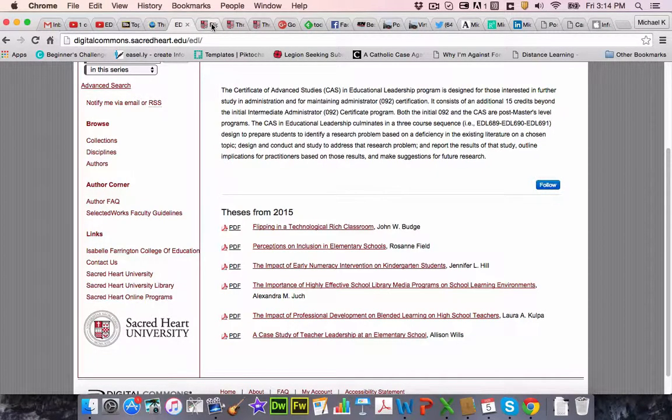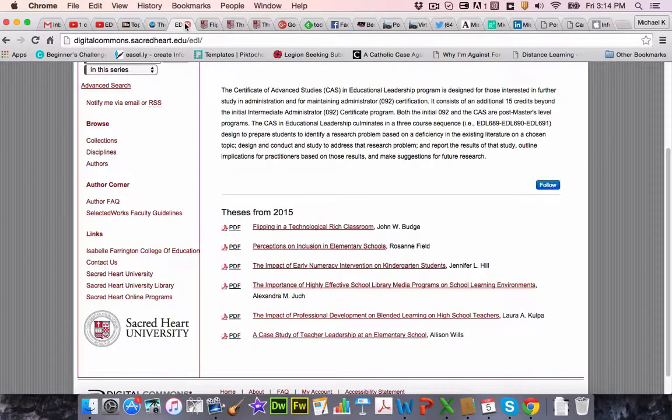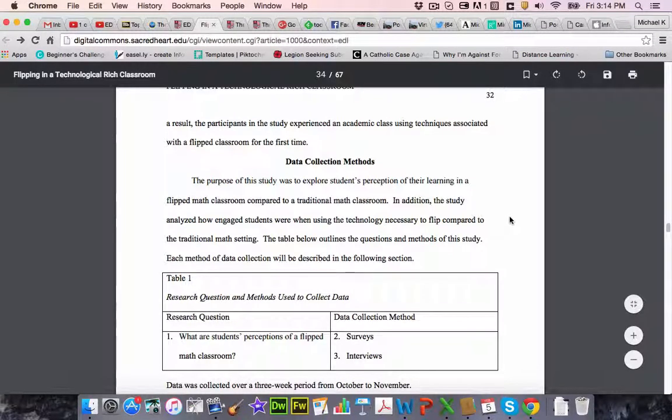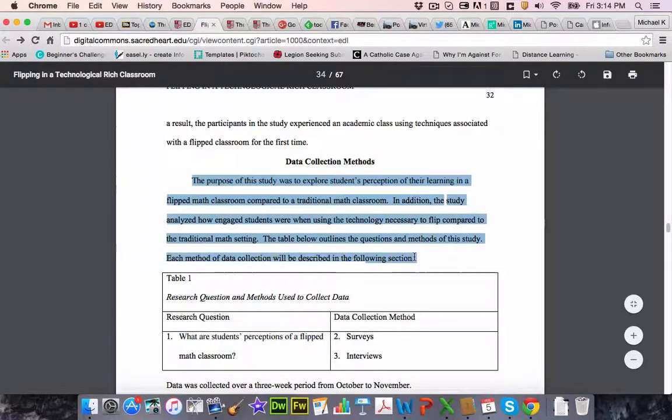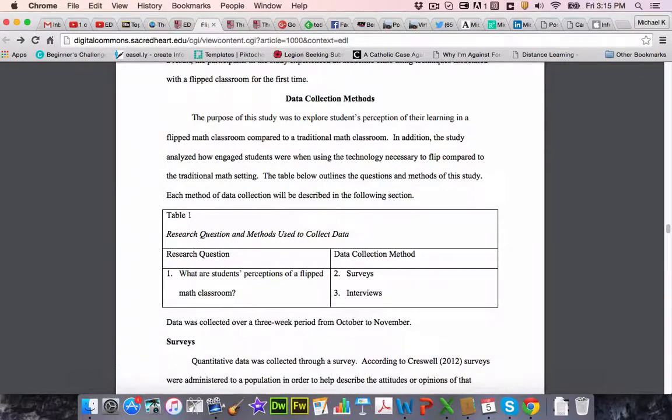If you were to go to the digital commons that we have for the six-year theses and look at some of the examples that are there, I'll just pick out a couple here. This one here is by John Budge, sorry, John Budge. I always want to stick an L there for some reason. John Budge called Flipping in a Technology-Rich Classroom. And the way in which he starts this section, and yours is the exact same way. So here's his data collection method section. He basically reminds us of what the purpose of the study was. And then he says that essentially each of the research questions will be answered using multiple methods of data collection found in this table.